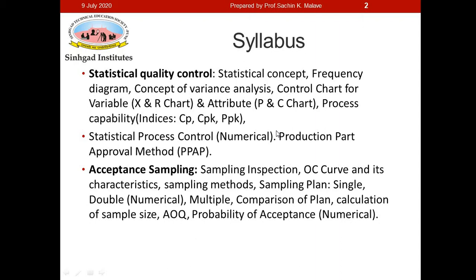Every manufacturing process will have some process variables. If we control these process variables, each will have one upper control value and one lower control value. We have to make sure that the process variables stay between those two limits, because every manufacturing process is going to vary due to many factors, and we must ensure that whatever variability exists is within permissible limits.